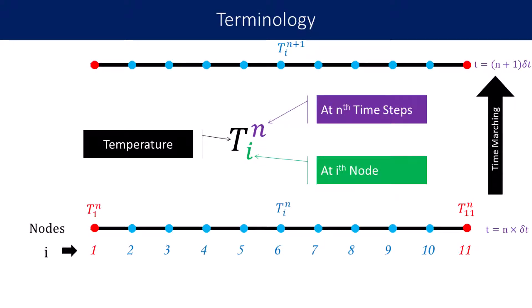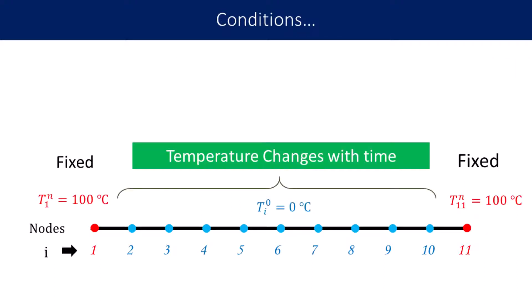We are going to use the following terminology: capital T with subscript I and superscript N indicates temperature at the ith node and nth time step. The subscript indicates the node number and the superscript indicates the time step number. Initially, at all internal nodes the temperature is zero. The endpoints — nodes 1 and 11 — are always maintained at 100 degrees Celsius, so we don't have to compute temperature changes at these nodes. As time progresses, the temperature at nodes 2 to 10 is going to change, and we need to compute these values.